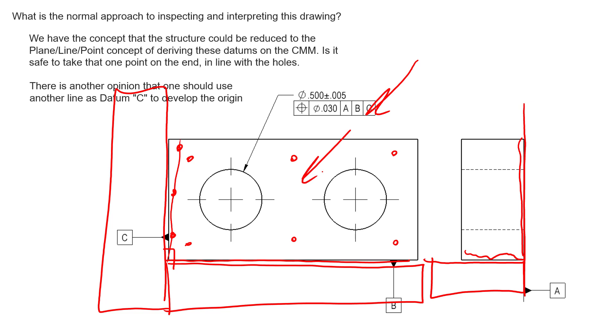Then we can slide our part down into that corner, and now we have datum plane C, datum plane B, and datum plane A off of those simulators. Then we can measure the location of these holes with respect to those simulators.